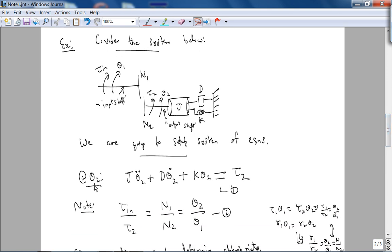At θ2, the output shaft, you have J·θ2̈ + D·θ2̇ + K·θ2, which are the impedances that oppose this torque τ2. This is in the time domain.